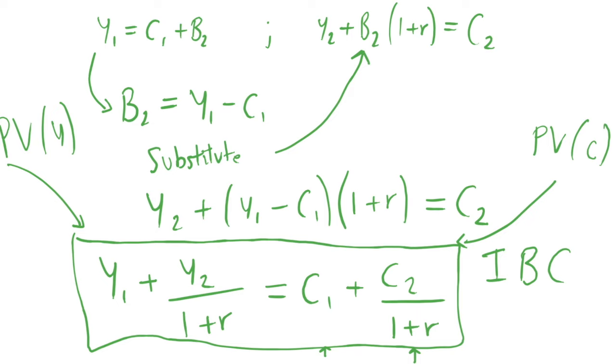But the most consumption we can have is just spending all of our budget, so we have this sort of inequality where consumption must be less than or equal to income, and we know that it will be equal to it because we want to just consume as much as we can. So that's the intertemporal budget constraint.